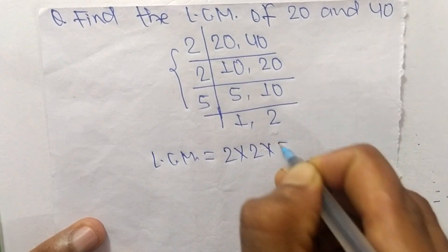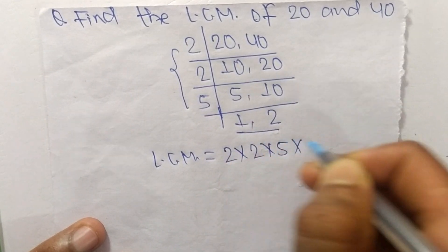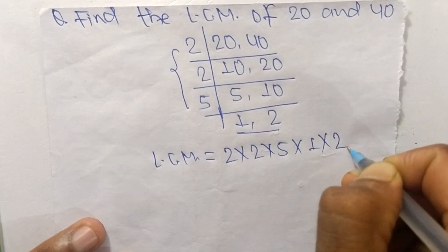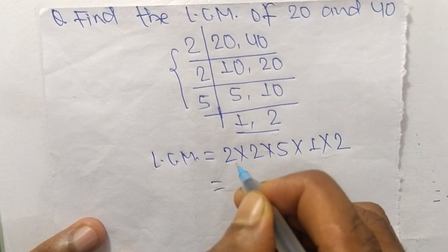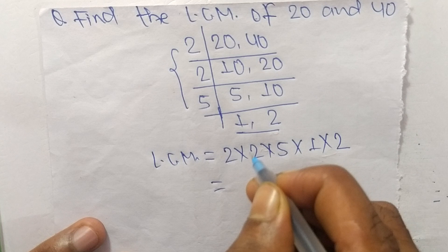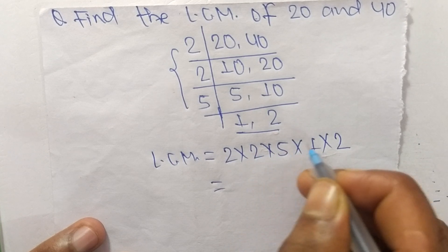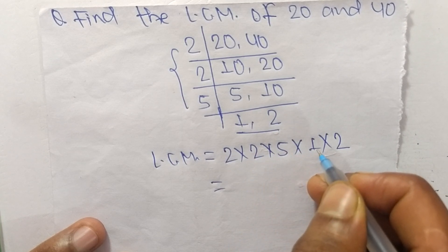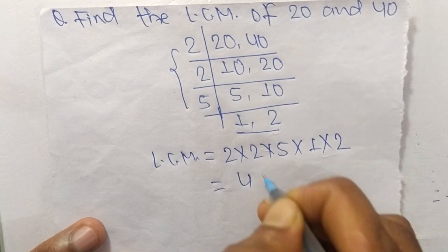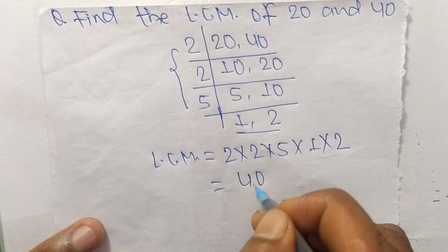So 2 times 2 means 4, times 5 it is 20, times 1 it is 20, and 20 times 2 means it is 40. So 40 is the LCM of 20 and 40.